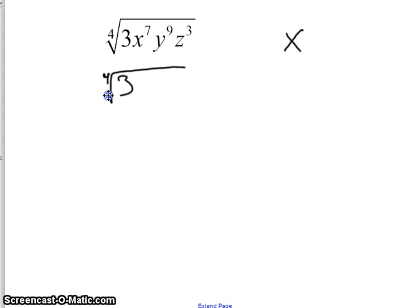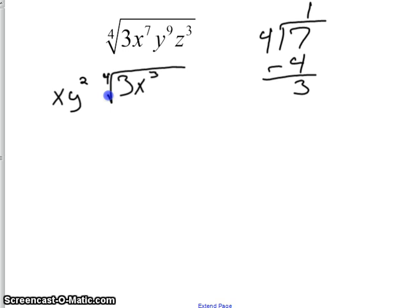I've got an exponent of 7 divided by 4. 1 times 4 is 4. 7 subtract 4 is 3. So that means that x to the power of 1 comes out, and x to the power of 3 stays in. 9 divided by 4 is 2. So that means that y squared comes out. 4 times 2 is 8. 9 subtract 8 is 1. So y to the first stays in. And 3 cannot be divided by 4, so z to the third stays in.